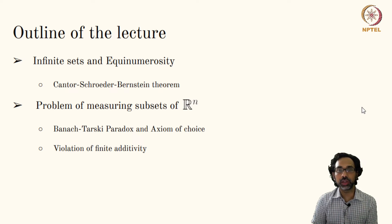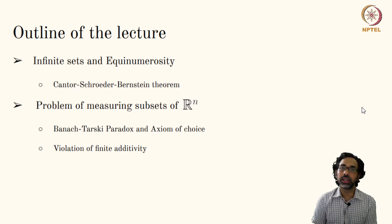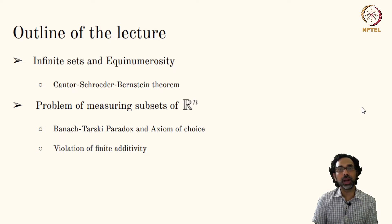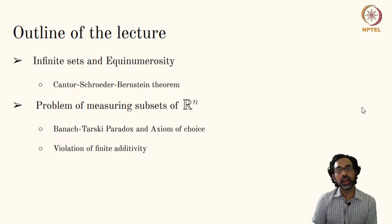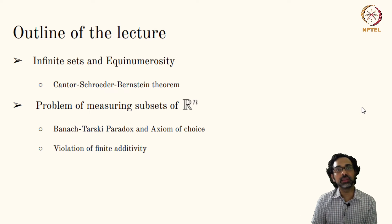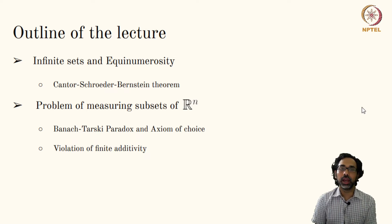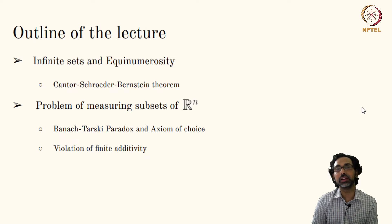— if we allow our new assignment of numerical values to arbitrary subsets of R^n to follow these rules, then we arrive at a contradiction. This is called the Banach-Tarski paradox, which says that you can start with a solid unit ball in R^3, divide it into finitely many pieces, and then reassemble them to form two disjoint copies of the original ball. Our notion of finite additivity is violated in this case.